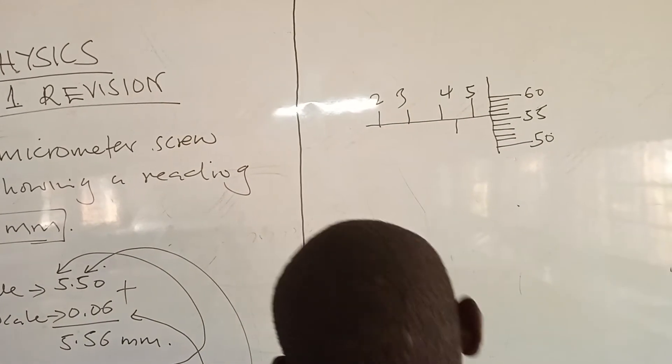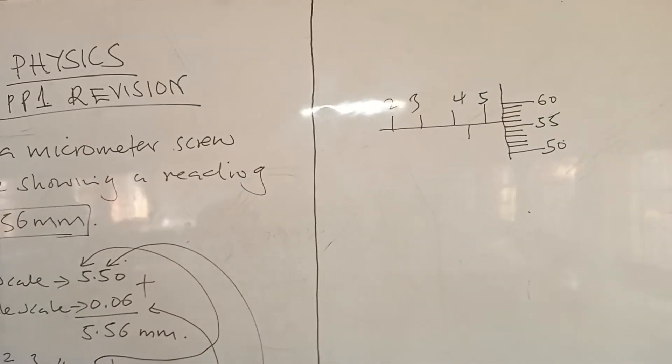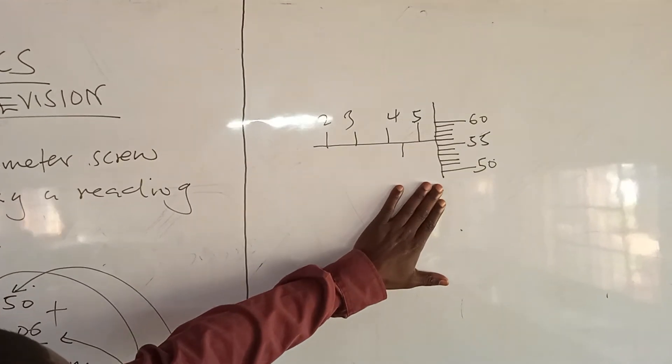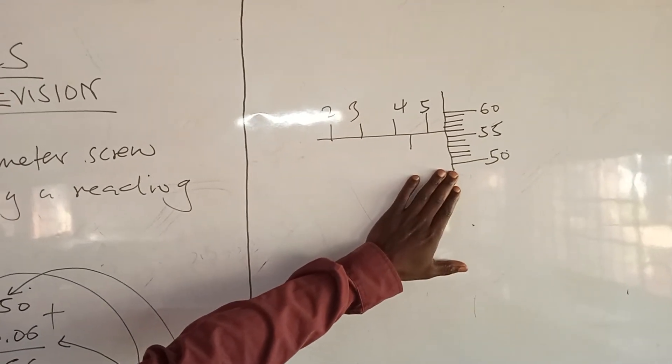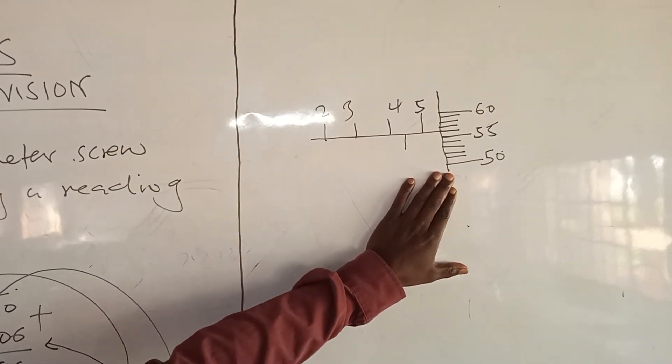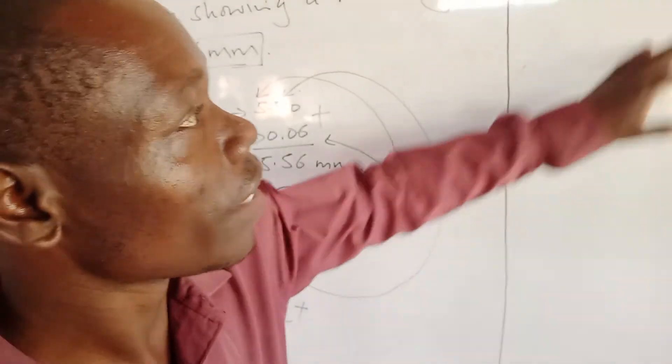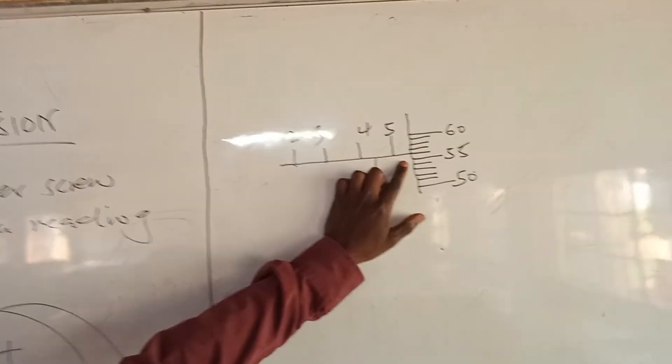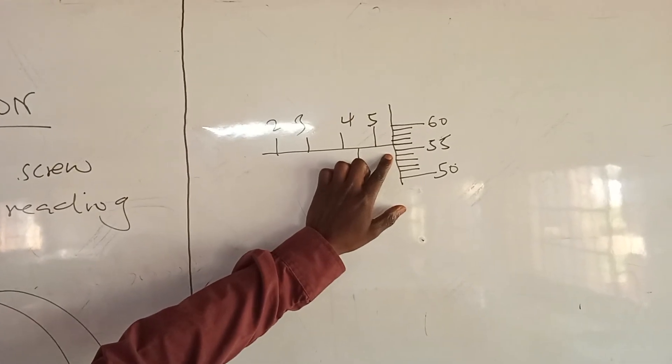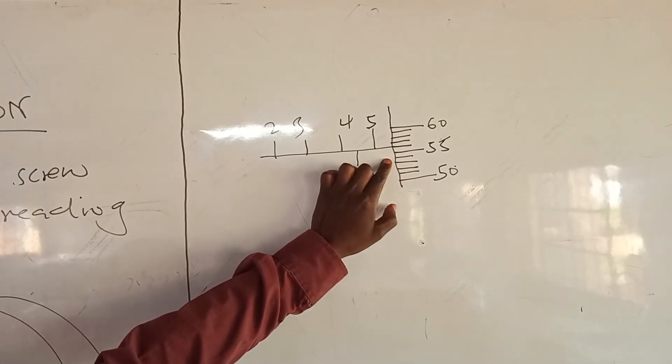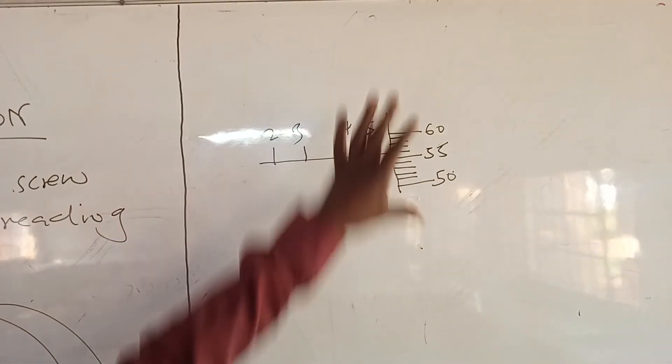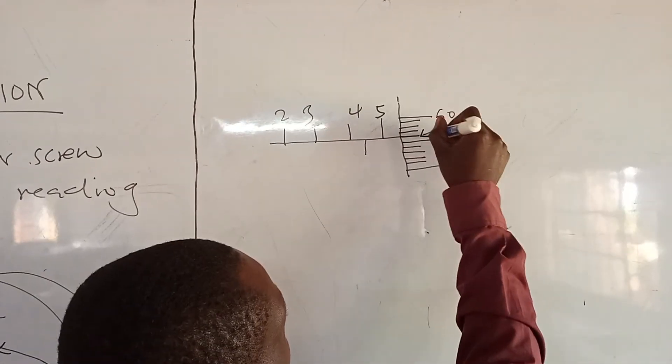Now when you look at our scale, the micrometer screw gauge is designed in such a way that it only shows readings in forms of 5. So if I want to estimate 5.6, I don't need to write it, I only indicate 5.5 or 5.0, 5.5 and 6.0. Then I know very well 5.6 is going to be this mark immediately after 5.5.